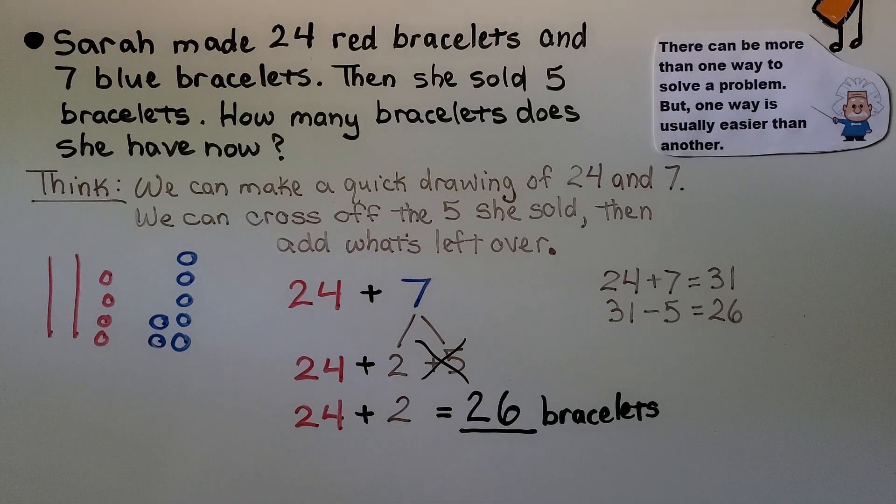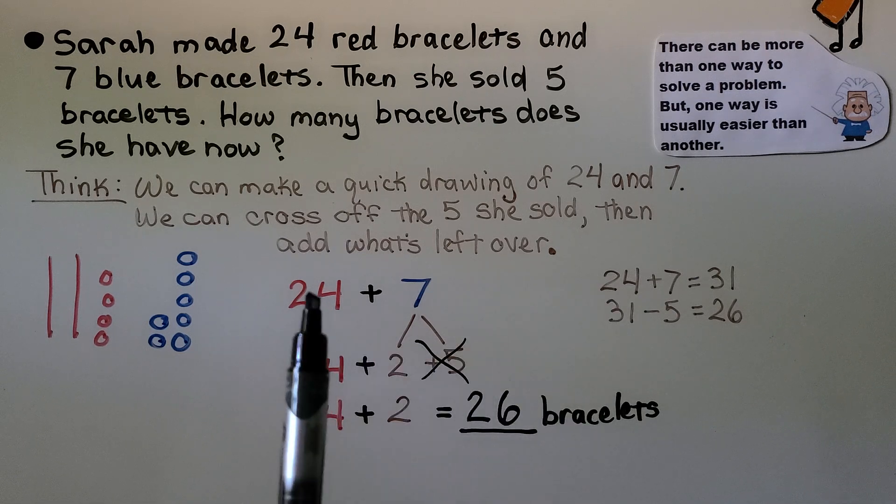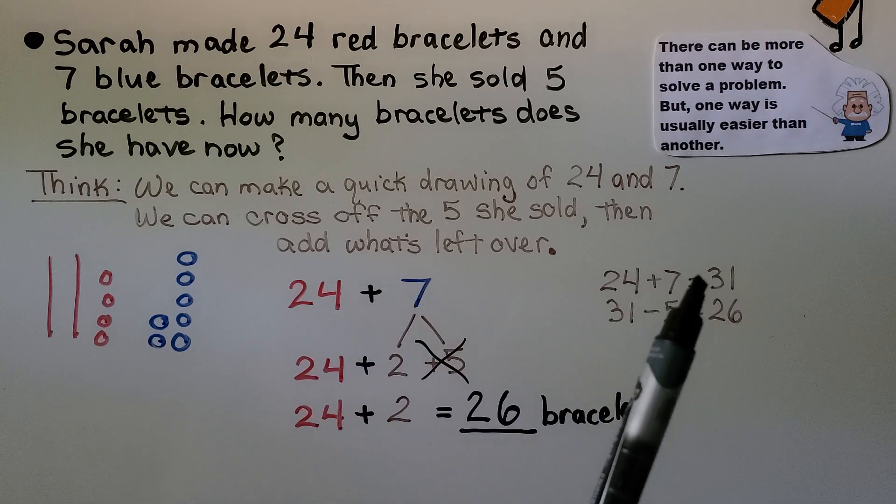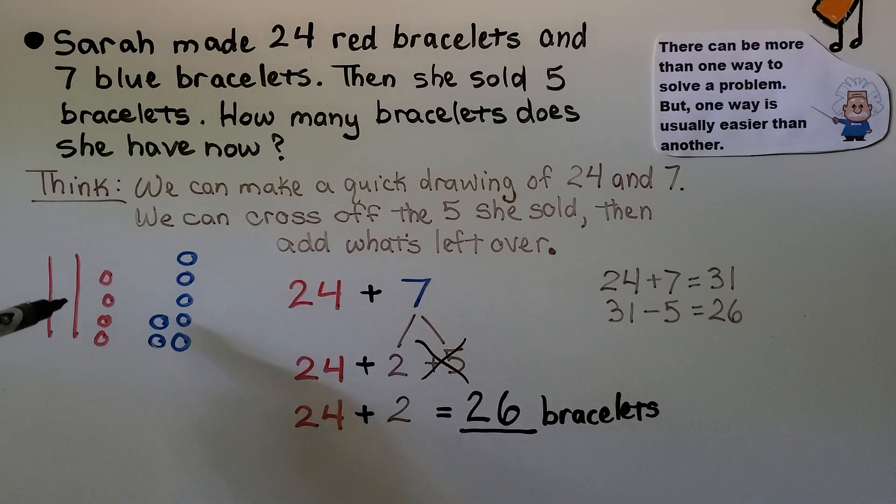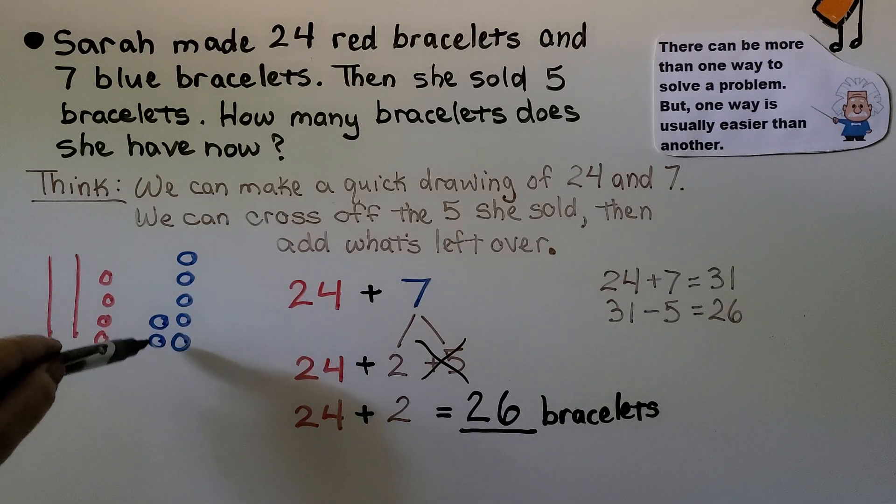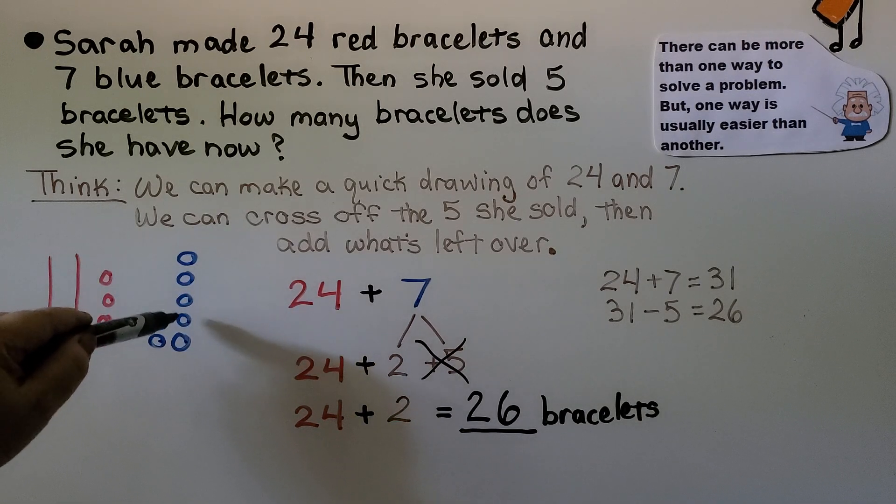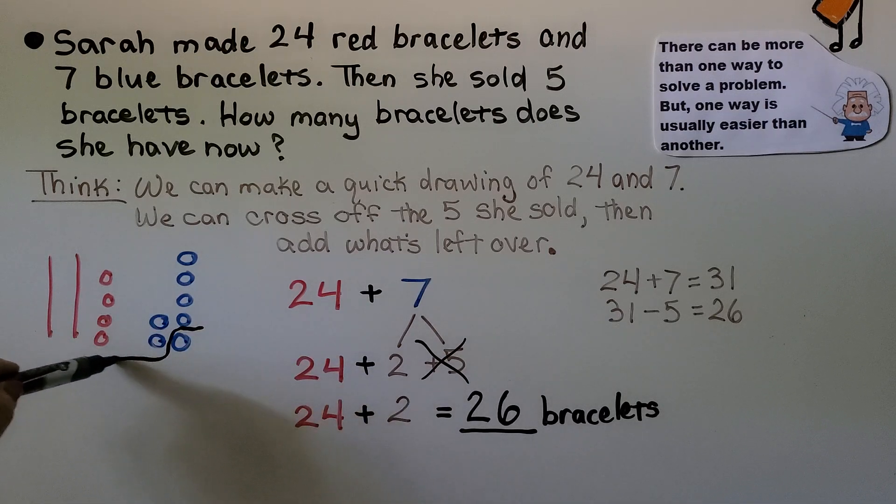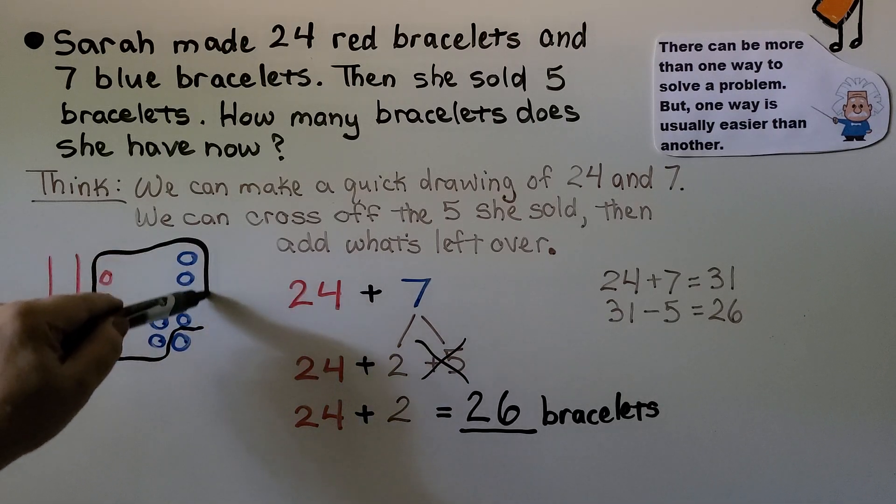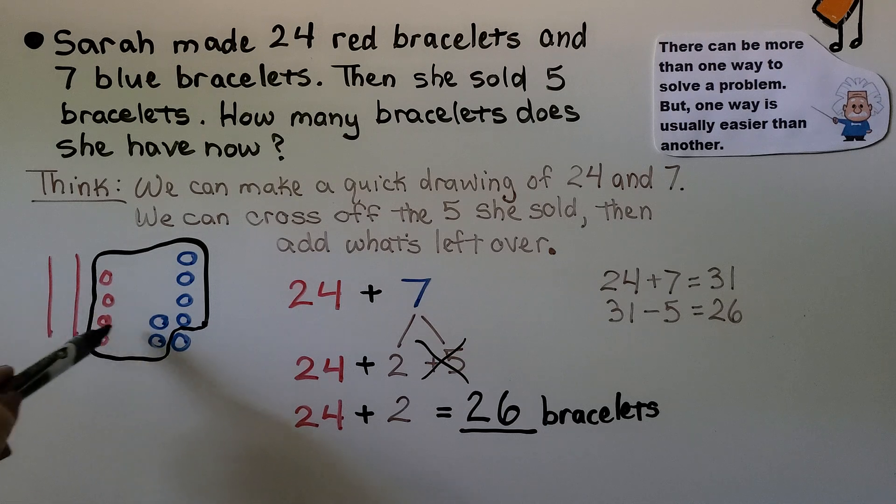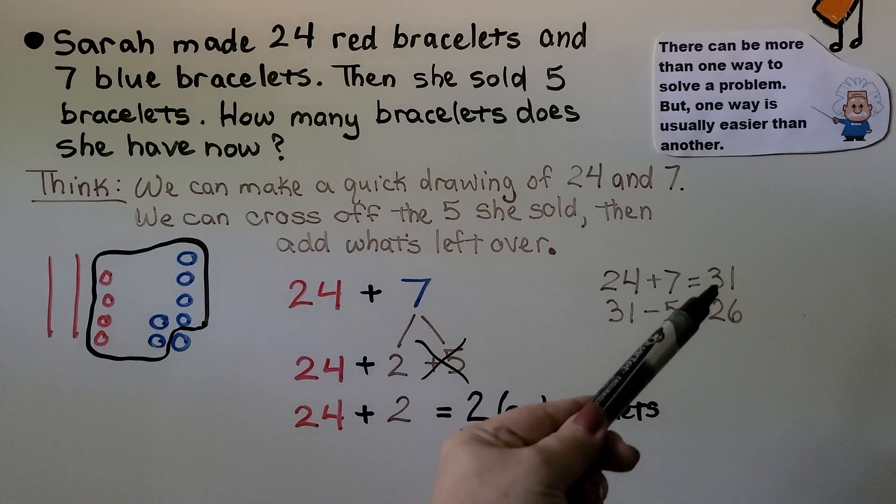Now the other way we could have done this is we could have added the 24 plus 7 and we could have regrouped this. We've got 4, 5, 6, 7, 8, 9, 10. So we would group these as a ten and we would have 3 tens with 1 one left over.